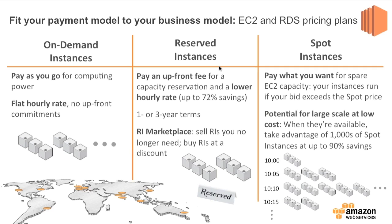And then finally, the other business model — and this one is only for EC2, not for RDS — is spot instance types. This is a fantastic opportunity to save more than 90% off your EC2 bill by using what we've borrowed from the financial services sector, which is allowing supply and demand to determine price. This is our unutilized capacity pool, and based on supply and demand, the price is set. A lot of applications should and could be taking advantage of this.